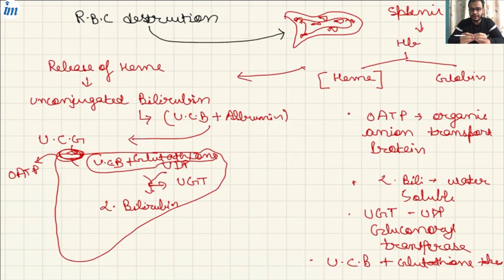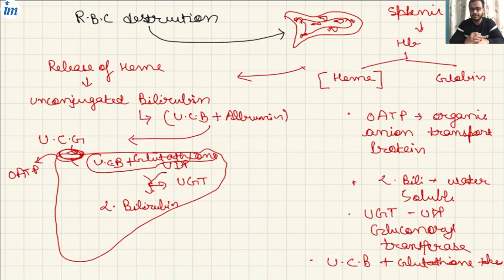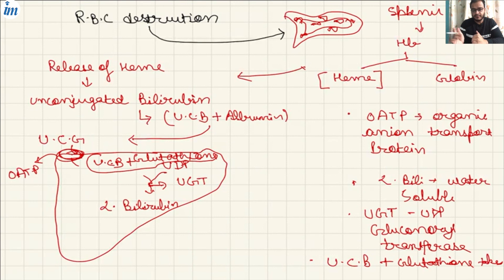Let's revise. We are studying bilirubin metabolism, which is the pathological basis of jaundice. In the body, RBCs after a lifespan of 120 days go to the spleen. Those cells are acted upon by splenic macrophages, which release hemoglobin. Further metabolization releases heme, which is converted into unconjugated bilirubin — a lipid-soluble molecule. This unconjugated bilirubin gets into blood circulation only with the help of albumin.